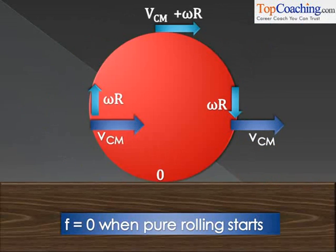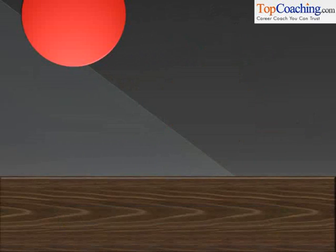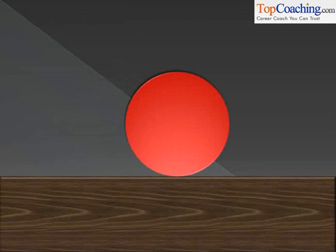As you can see, first when the ball comes in contact with the floor, it slides on the floor. It slides on the floor because the relative velocity between the bottommost point of the ball and the floor is not zero.